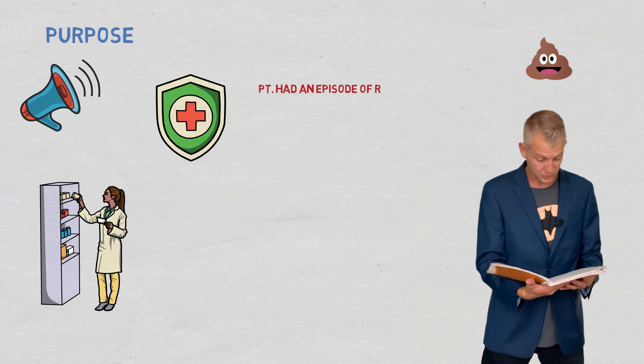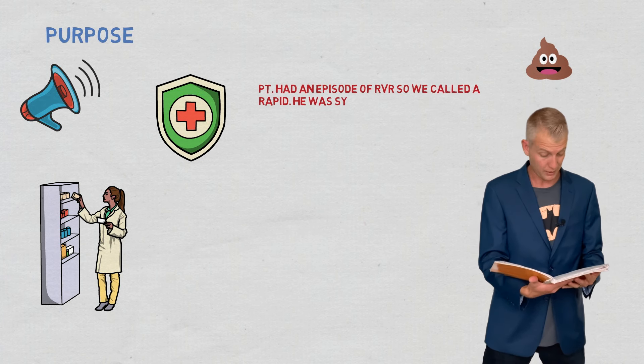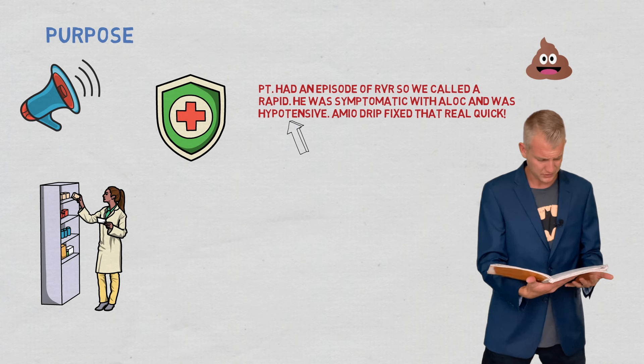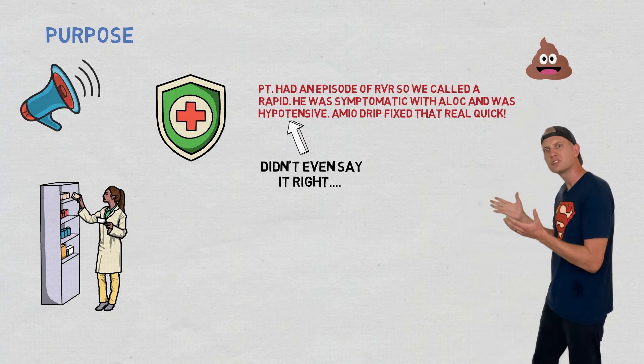Patient had an episode of RVR so he called a rapid. He was symptomatic with ALOC and was hyper intensive. Amy would drip fix that real quick. Really? What does that even mean? Just pretend like you know.